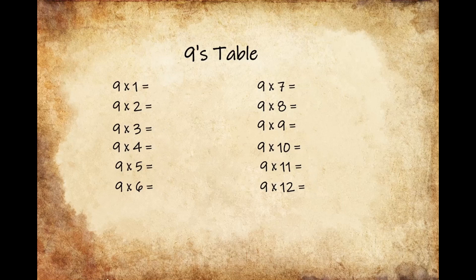Now for the 9s table. 9 times 1 gives us 9, 9 times 2 gives us 18, 9 times 3 gives us 27, 9 times 4 gives us 36, 9 times 5 gives us 45,